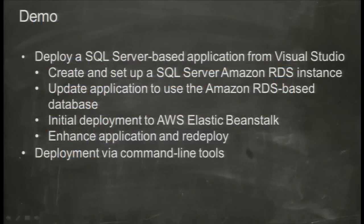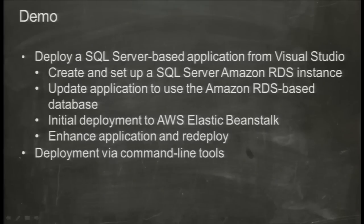About a year ago if you wanted to deploy a .NET application to AWS, your release process might have been: go spin up a few EC2 instances, copy your application to all those instances, create and configure a load balancer, spin up another EC2 instance, install SQL Server, and then figure out your whole patching and backup needs. Today with Amazon RDS we can create our SQL Server and that takes care of all our backup and patching needs. And using AWS Elastic Beanstalk to host our application, that takes care of capacity provisioning, load balancing, auto scaling, and application health monitoring.